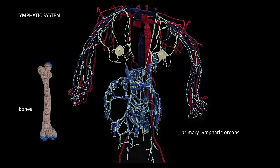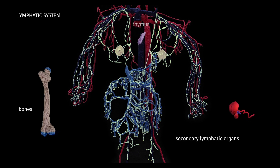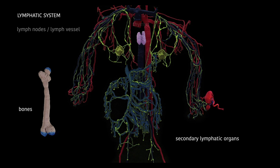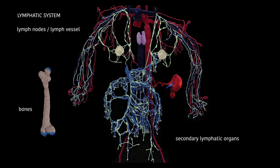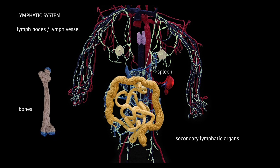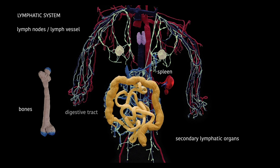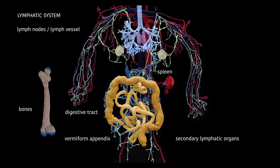Primary lymphatic organs are the bone marrow, where blood is also formed, and the thymus, which is important for the maturation of certain immune cells. Secondary lymphatic organs include the lymph nodes, which are interconnected by vessels, the spleen, and to some extent the bone marrow again. Other secondary lymphatic organs are all mucosa-associated tissues of the digestive tract, with the vermiform appendix and the respiratory tract, including the lungs.